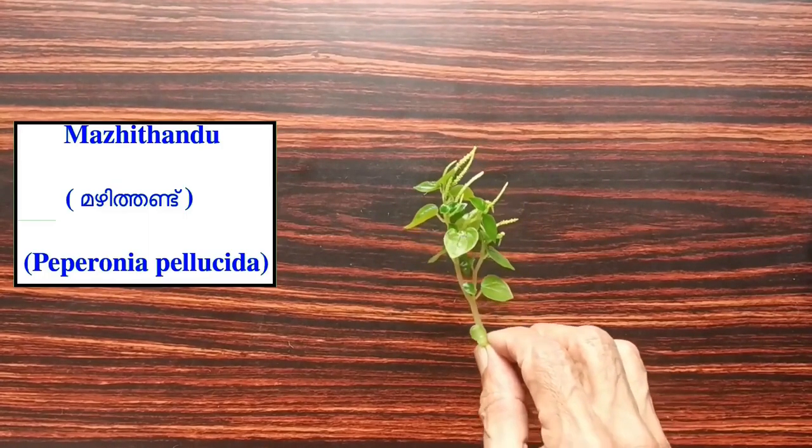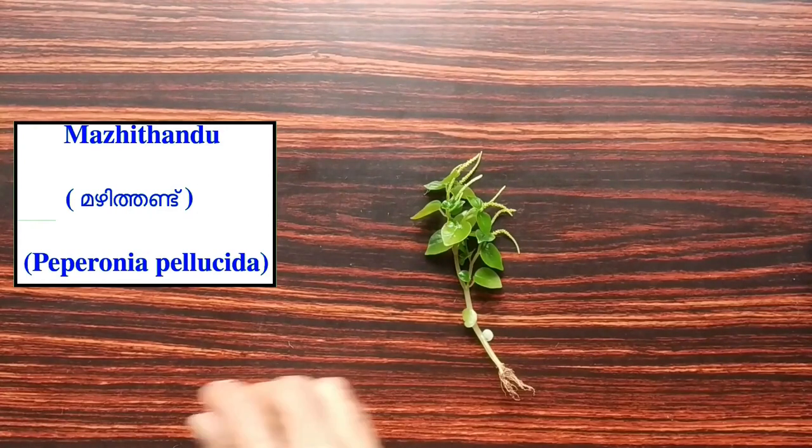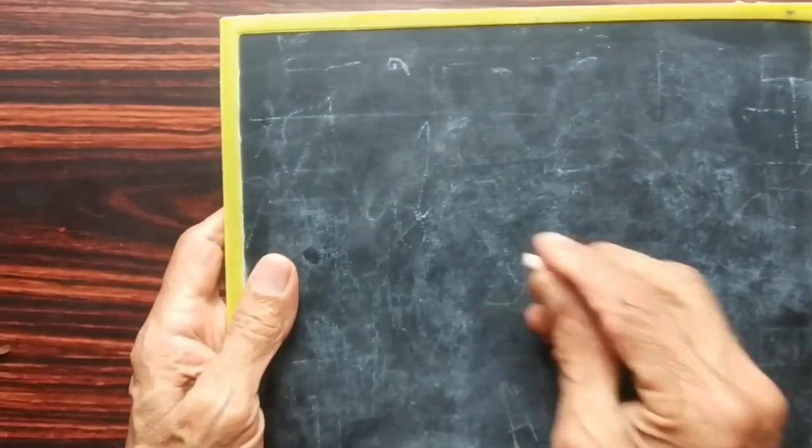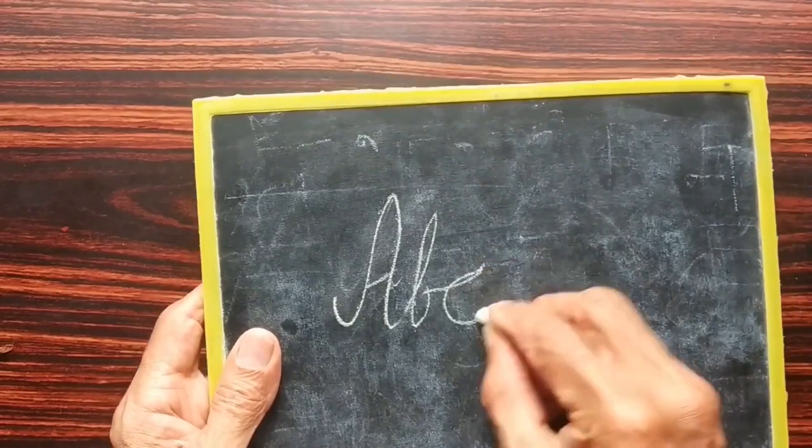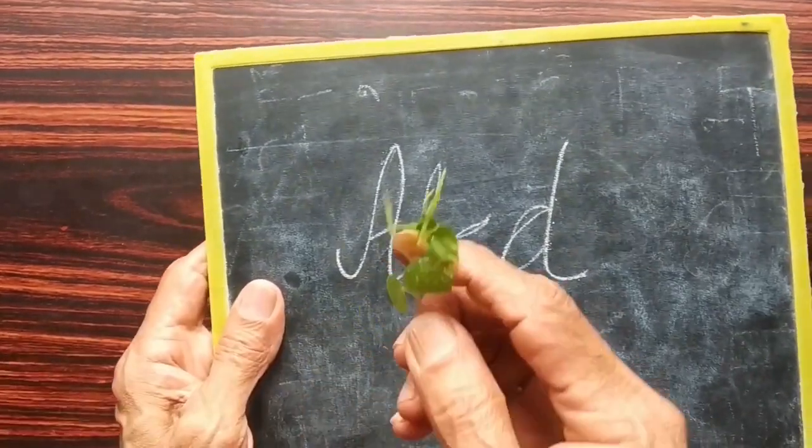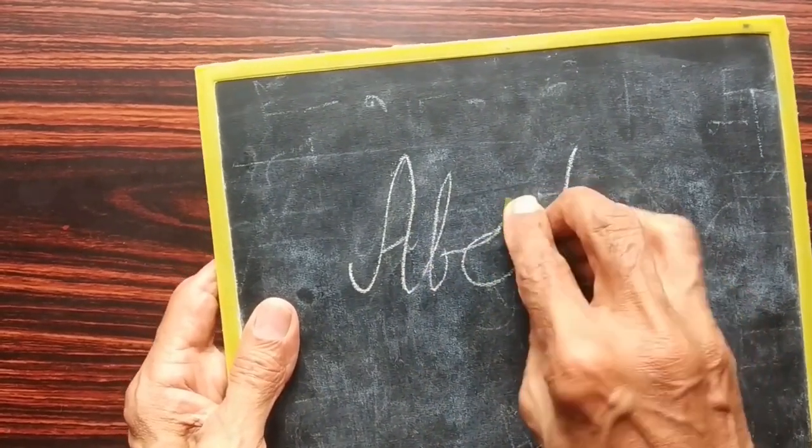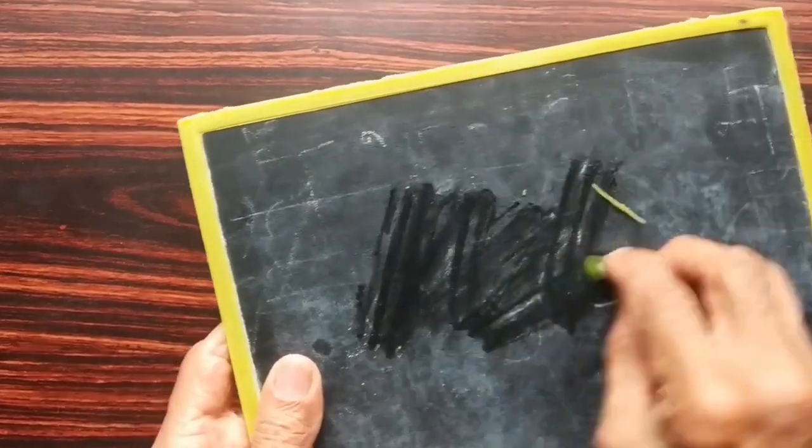This is a small plant called Mashitanda in Malayalam language and the scientific name is Peperomia pellucida. As a child, when I was studying in primary school, I remember having used the stem of this plant to erase the writing on the slate.